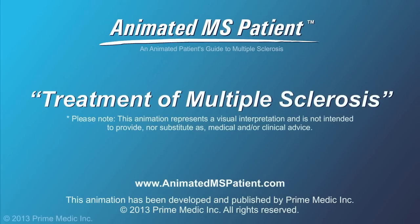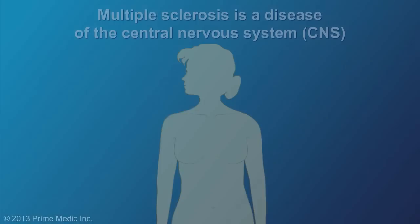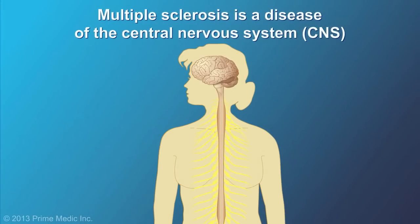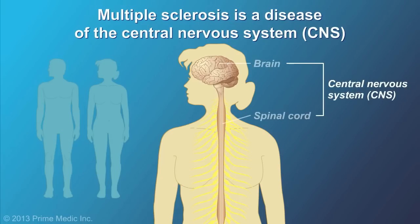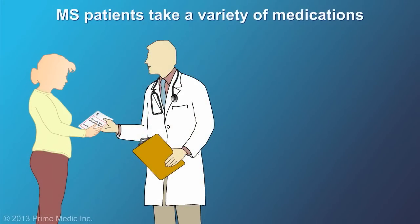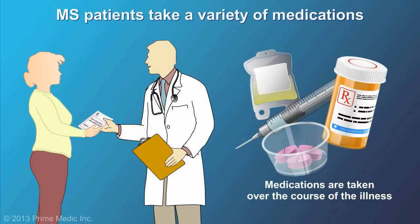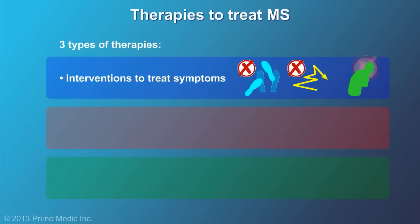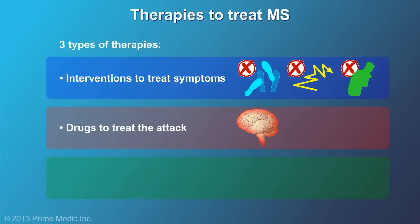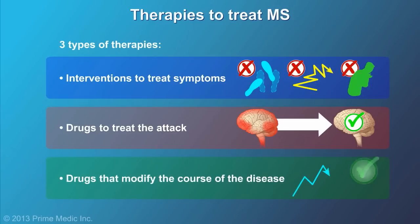Treatment of Multiple Sclerosis. Multiple sclerosis, or MS, is a complex disease caused by inflammation of the central nervous system. Most people with MS will take a variety of medications over the course of their illness. There are three types of therapies used to treat MS: interventions to treat symptoms, drugs to treat acute attacks, and drugs that modify the course of the disease.